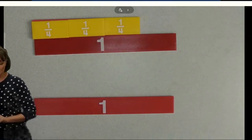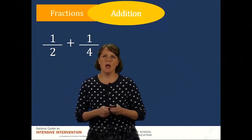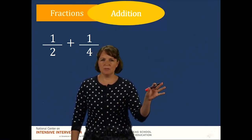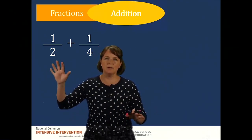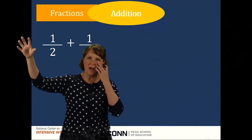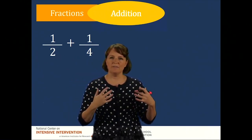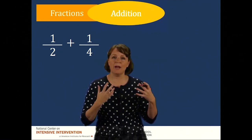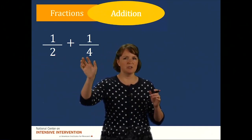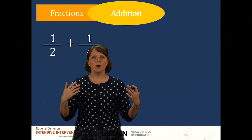Now I'm going to focus on the abstract. I should not add a one-half piece plus a one-fourth piece, because remember those fractional parts don't have the same value. So how do we often teach students to move from a situation where we don't have common denominators to a situation where we do? This is where we write out our multiples.